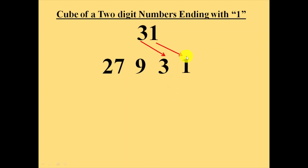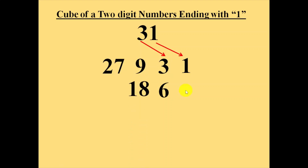Later we will leave this number 1 and multiply this 3 with 2, which will make 3 into 2 is 6. Then we will multiply this 9 with 2, which will make 18, and note down here. Then we will add these two lines.